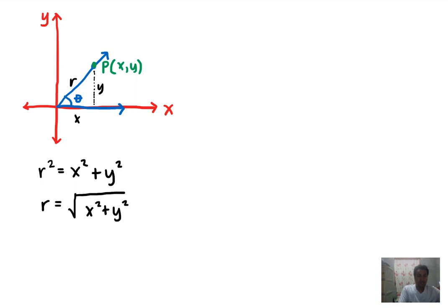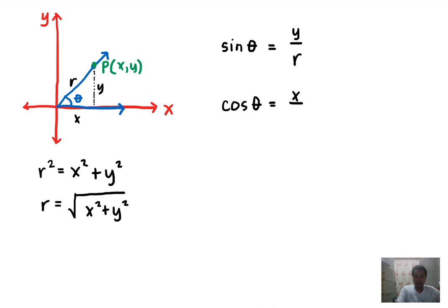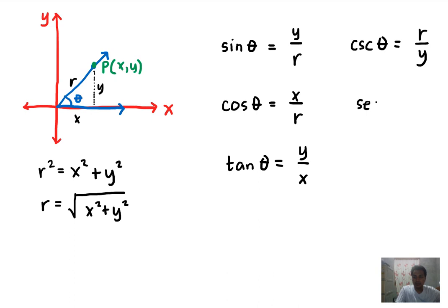So we can solve for r, which is equal to the square root of x squared plus y squared. Based from the values of x, y, and r, we can solve for the six trigonometric ratios. Sine of theta equals y over r, cosine of theta equals x over r, tangent of theta equals y over x, cosecant of theta equals r over y, secant of theta equals r over x, and cotangent of theta equals x over y.